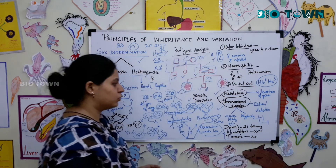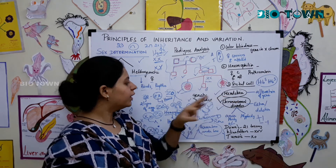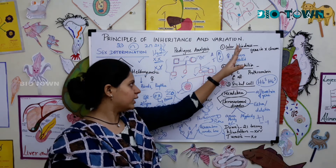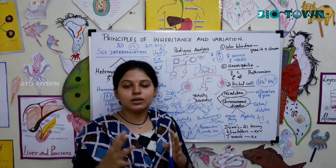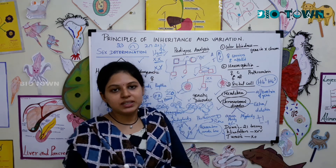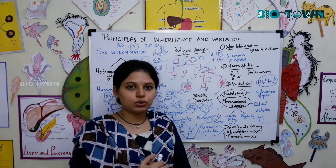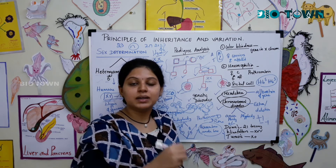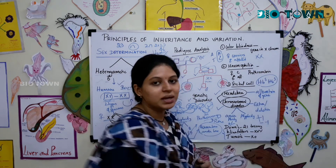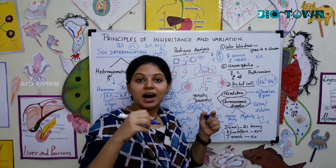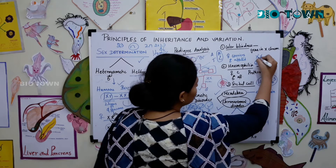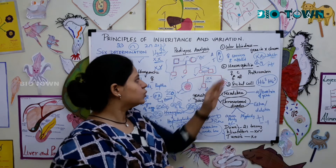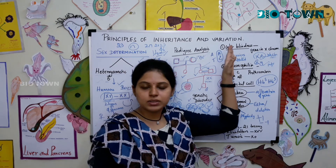In Mendelian disorders, three important conditions are studied. First is color blindness, and along with hemophilia, these are X-linked inheritance conditions — there is a genetic defect in the X chromosome. Females are not affected because they have a pair of X chromosomes and become carriers. Males are affected because they have only one X chromosome, so the defect is expressed. Color blindness affects the retina's rods and cones, causing difficulty sensing red and green colors — everything appears gray.